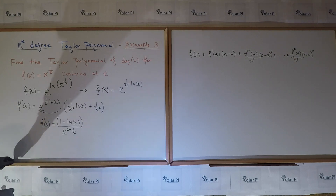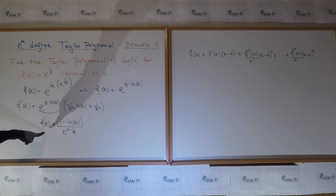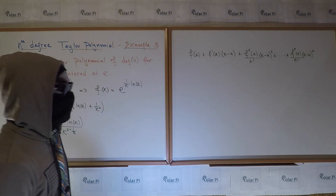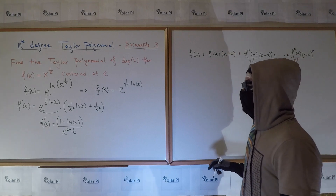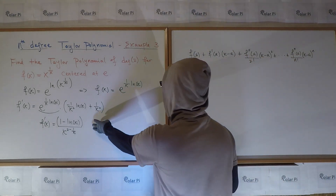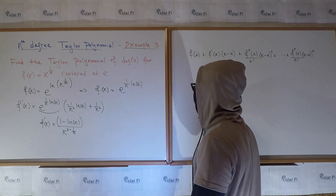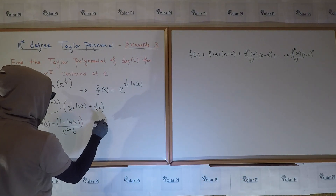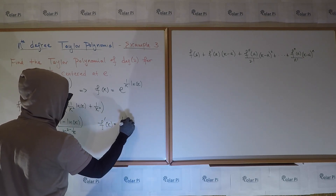Now we need to find f double prime. Remember, we have to evaluate f prime and f double prime at e. I'll work on evaluating f prime at e, but let's get to f double prime. To find f double prime, we need to clearly use the quotient rule on f prime. First, let me show that f prime can be written as 1 minus ln of x over...